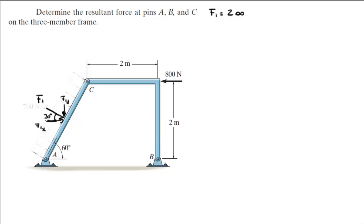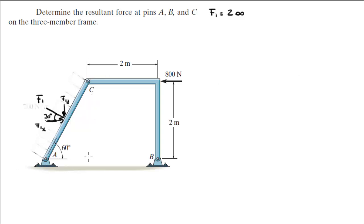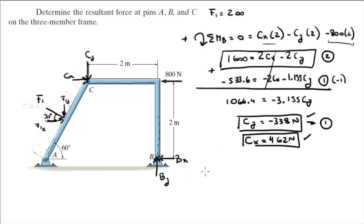Now, that we got CY and CX, we can basically find BY and BX. So, you know that sum of the forces in the X is equal to 0. So, CX minus 800 minus BX is equal to 0. So, you solve for BX because you already have CX and it is equal to 338 newtons.